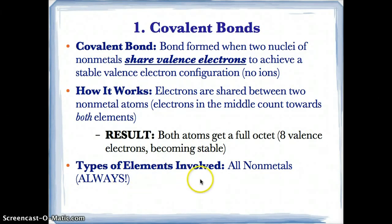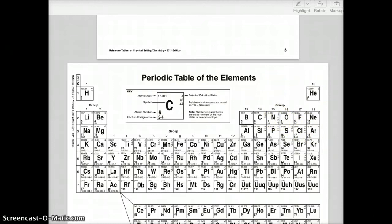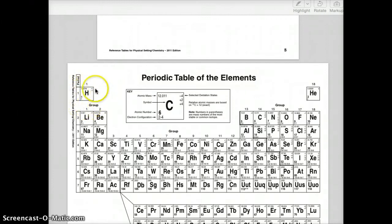Covalent bonds involve all nonmetals only. Nonmetals are elements to the right of the steps in the periodic table. The one and only exception is H — even though hydrogen is to the left of the steps on the periodic table, hydrogen is still a nonmetal. So H is the only nonmetal on the periodic table that's to the left of the steps.